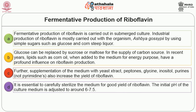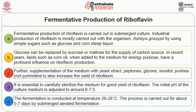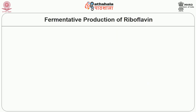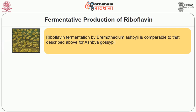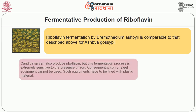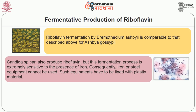It is essential to carefully sterilize the medium for a good yield of riboflavin. The initial pH of the culture medium is adjusted to around 6 to 7.5. The fermentation is conducted at a temperature of 26 to 28 degrees centigrade and carried out for about 5 to 7 days by submerged aerated fermentation. Riboflavin fermentation by Eremothecium ashbyii is comparable to that described above for Ashbya gossypii. Candida species can also produce riboflavin, but this fermentation process is extremely sensitive to the presence of iron, so iron or steel equipment cannot be used and must be lined with plastic material.